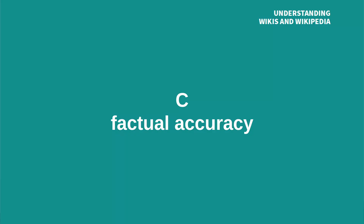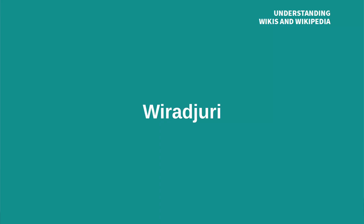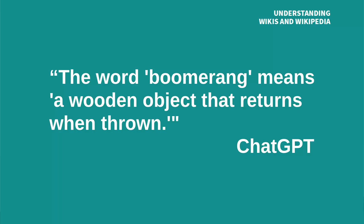My biggest concern is the factual accuracy. For example, according to our text, boomerangs come from the indigenous people of Australia, and the word stems from a specific language of the Aborigines called Virajuri. The word boomerang was written down first by a European in 1822, and I quote: "The word boomerang means a wooden object that returns when thrown." Which is quite suspicious — that the original meaning of the word is a perfect description of the modern usage. So I had to look all these facts up.